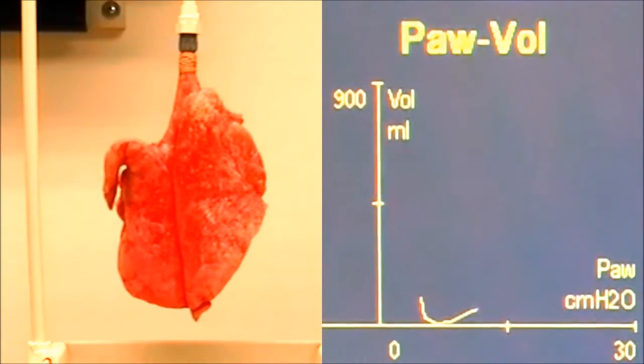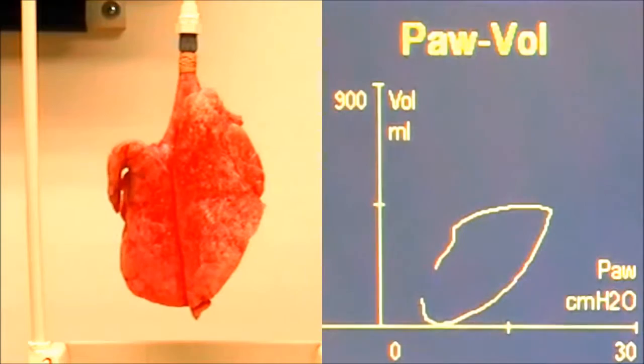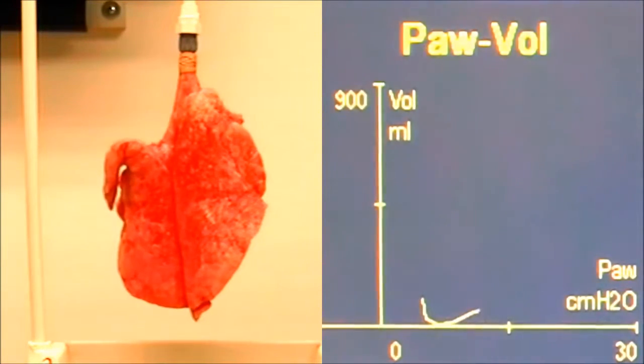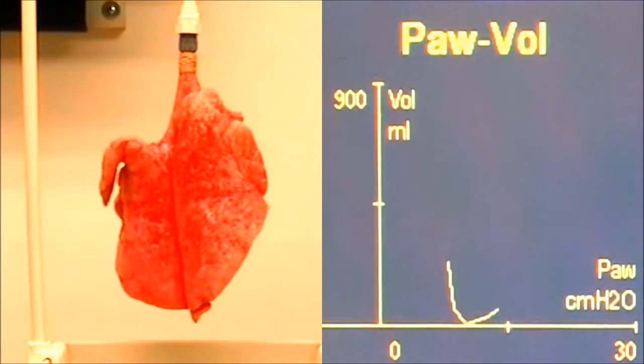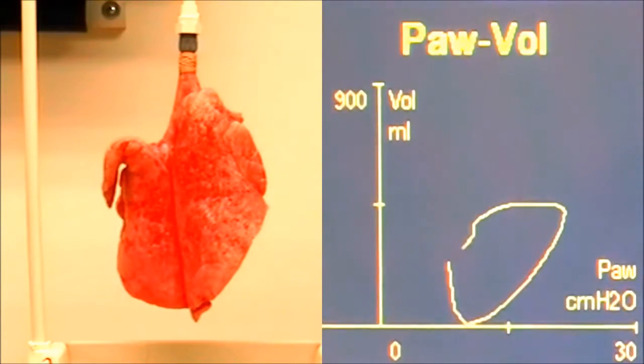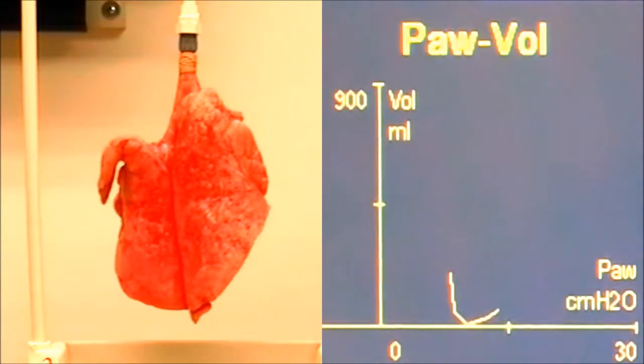The first thing I'm going to do is turn my PEEP up to 8. I'm going to switch over to my bag. Then turn my APL valve just slightly above 30 to around the 40 range. 30 to 40 is where you're targeting with your sustained recruitment breath.